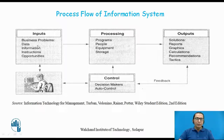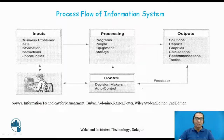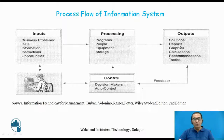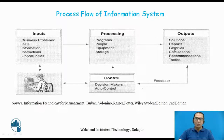If you look at the input, it consists of data, information, instructions, and opportunities. All this input is processed by the information system. People use different programs and equipment — it may be laptops, smartphones, or desktop computers — and there can be storage where all processed data and information is stored. After processing we get output. The output can be different types of reports, graphs, calculations, recommendations, and so on. That is called output — the business problems are processed to generate the required output.